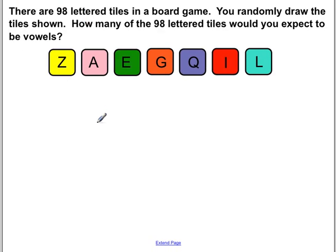Next question. There are 98 lettered tiles in a board game. You randomly draw the tiles shown. How many of the 98 lettered tiles would you expect to be vowels? So they're using this as like a case study. They pulled only seven out of the 98 to see how many would be vowels. So out of the seven, there are three that are vowels. So we could write vowels and total on the bottom. So that in itself is three out of seven.